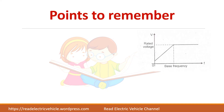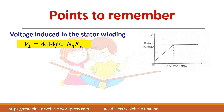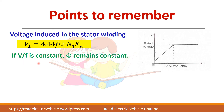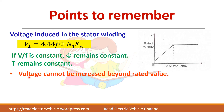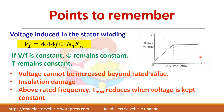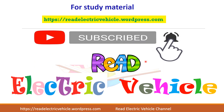Key points to remember: the voltage induced in the stator winding is directly proportional to frequency and flux. If the V by F ratio remains constant, flux remains constant and torque remains constant. Up to base frequency, the V by F ratio is kept constant. After base frequency, voltage must be kept constant to avoid insulation damage, so maximum torque decreases after base frequency.